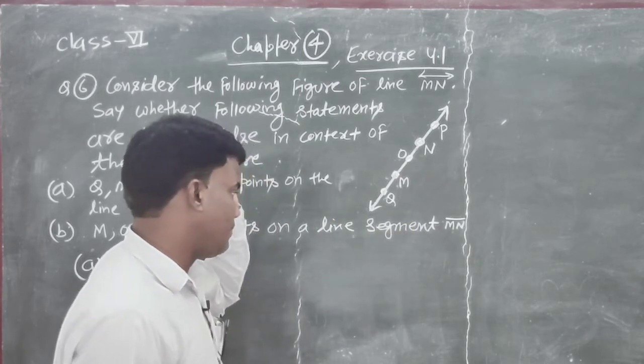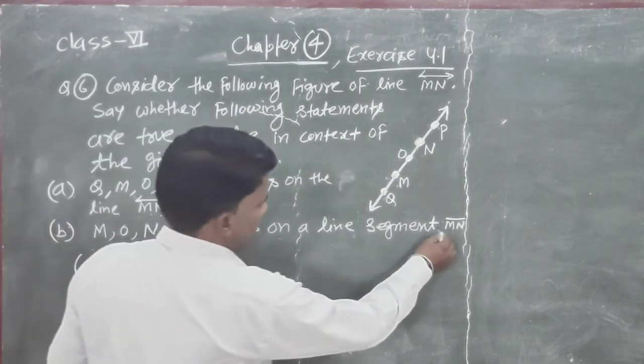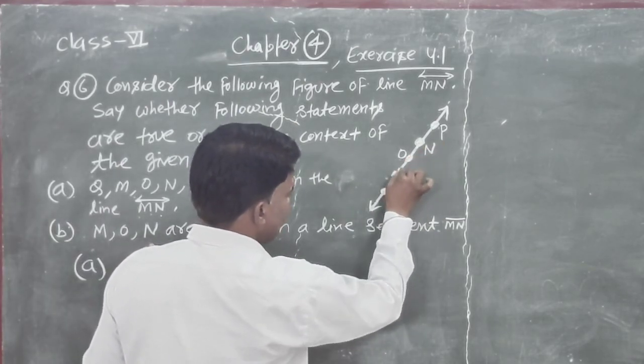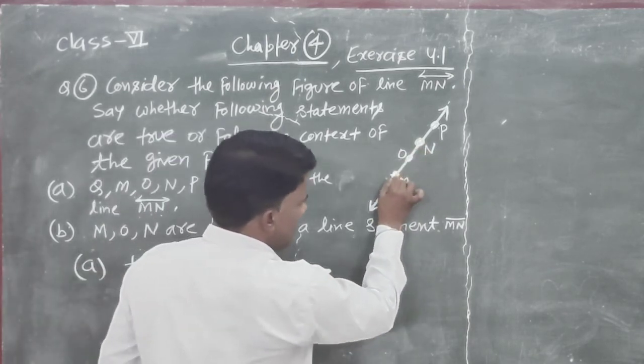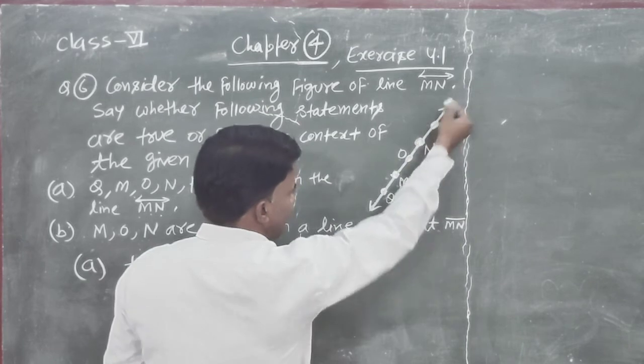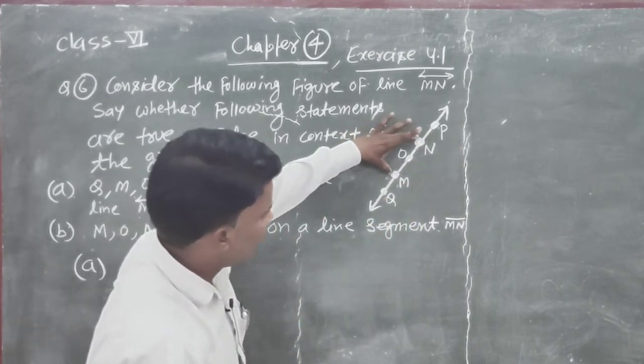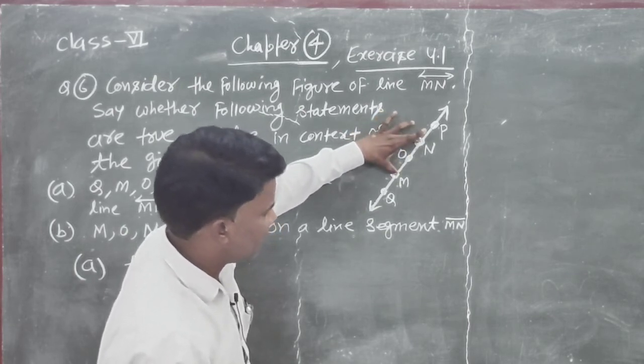So this line segment, here you can see M-O-N, line segment M-N. Look at line segment M-N, M-O-N line segment M-N. This is fixed point M-O-N. The line segment M-O-N is like this. It's not fixed point M-N, line segment M-N.